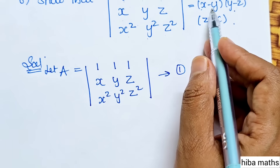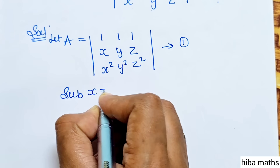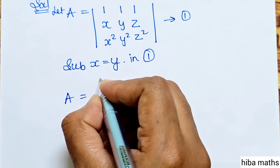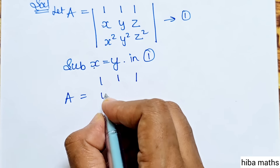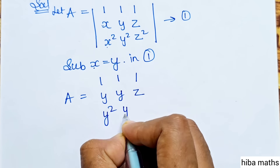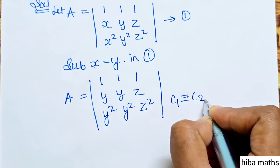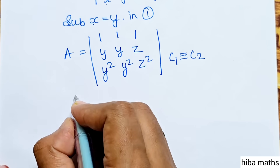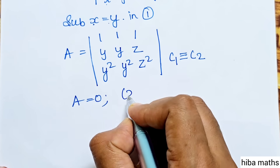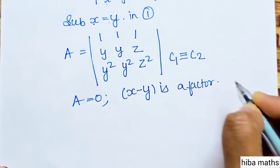The factors to prove are x minus y, y minus z, z minus x. To show x minus y is a factor, substitute x equal to y in matrix 1. Then A has columns: 1,1,1 then y,y,z and y squared, y squared, z squared. So C1 is identical to C2, meaning A equals 0. When A equals 0 with x equal to y, x minus y is a factor.